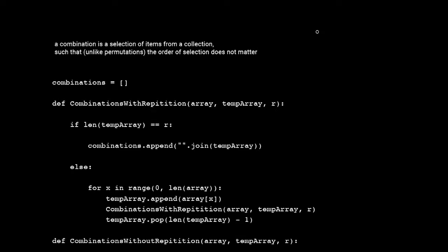Hey guys, it's Quinston and today we are going to talk about combinations. So if you ever took a math class in college, you'd know what a combination is. You might have looked at something like NCR. So what this basically means is a combination is a selection of items from a collection such that the order of selection does not matter.